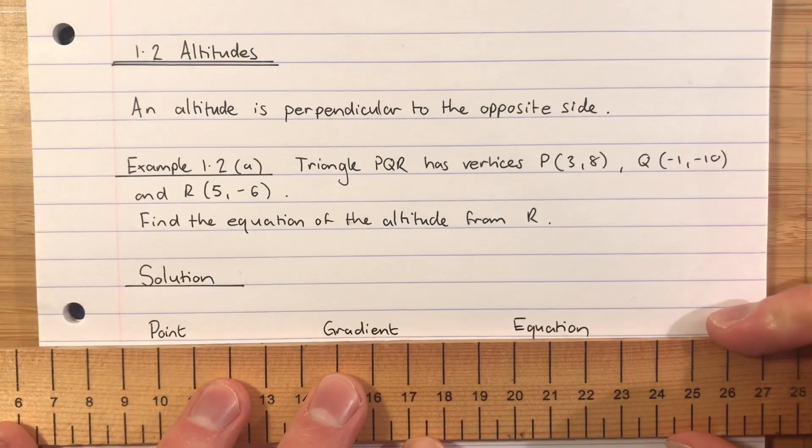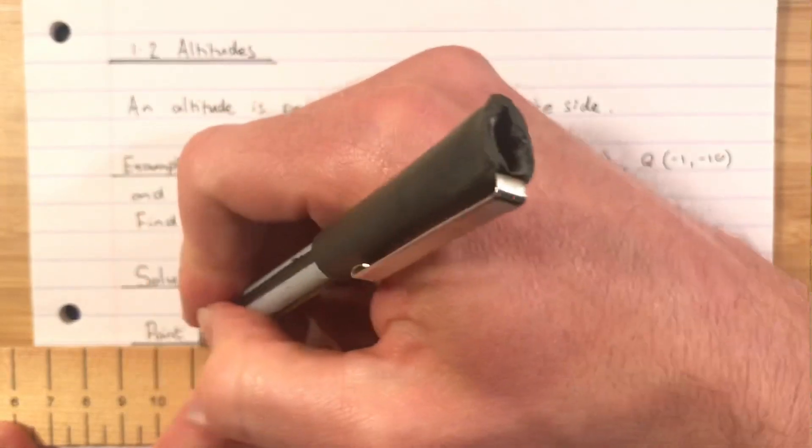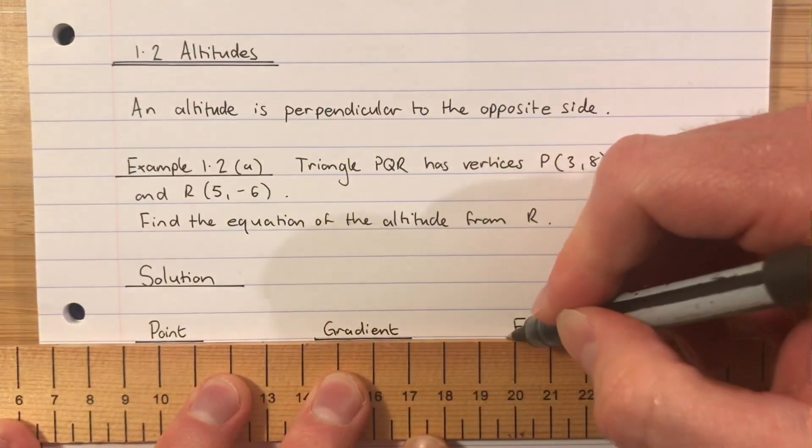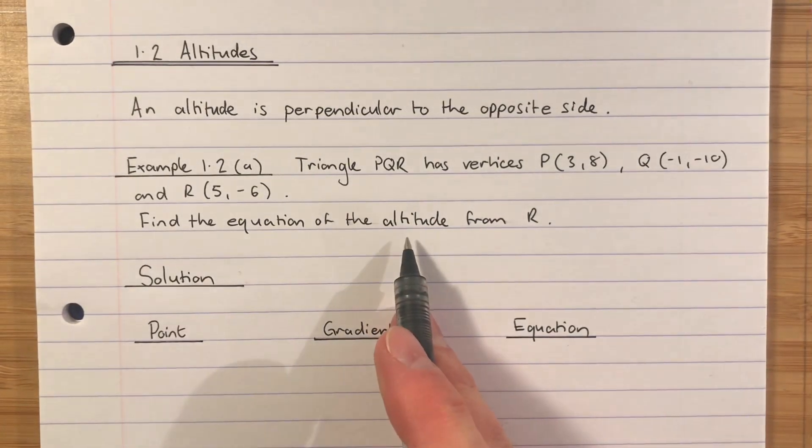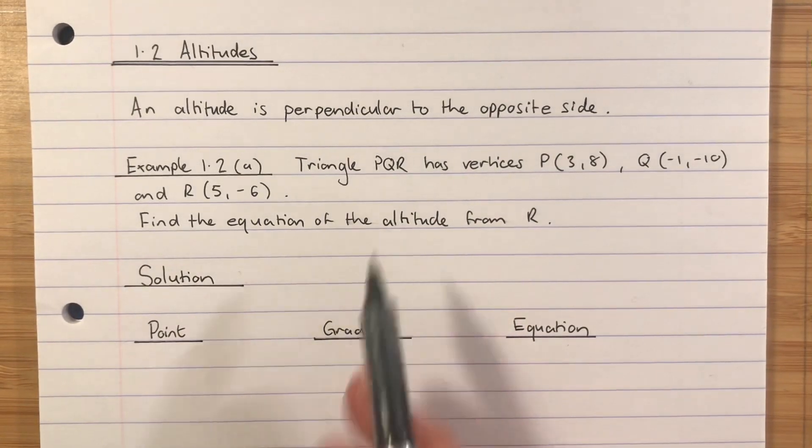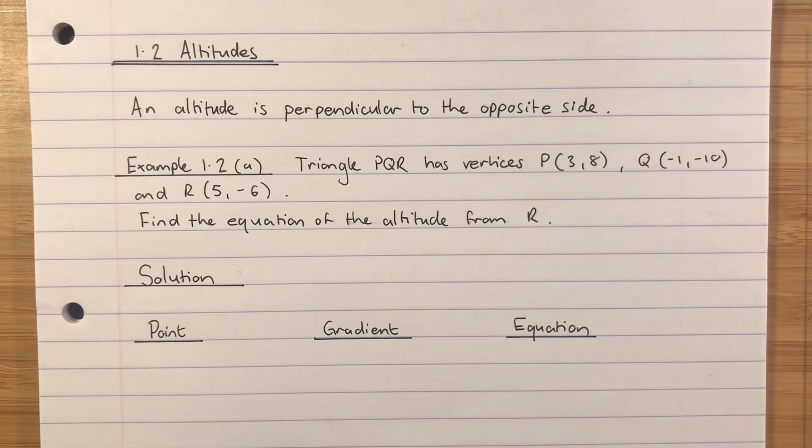Any time you ask for the equation of a straight line, this is our starting point: point, gradient, and equation. What is it we know about the altitude? The statement is an altitude is perpendicular to the opposite side.